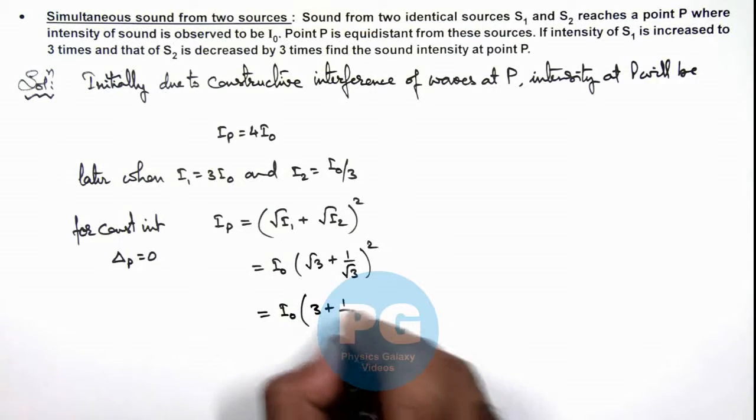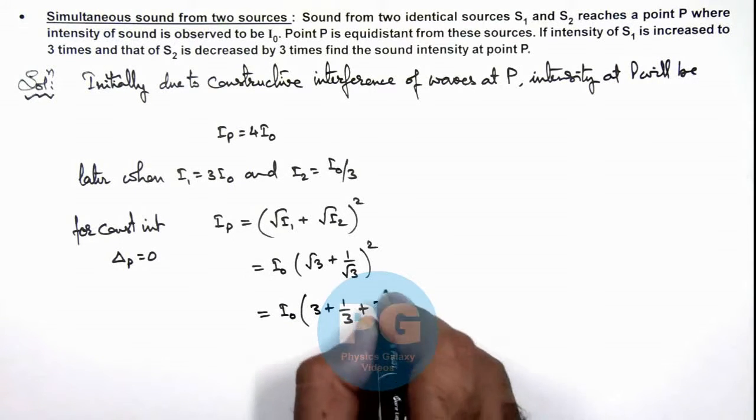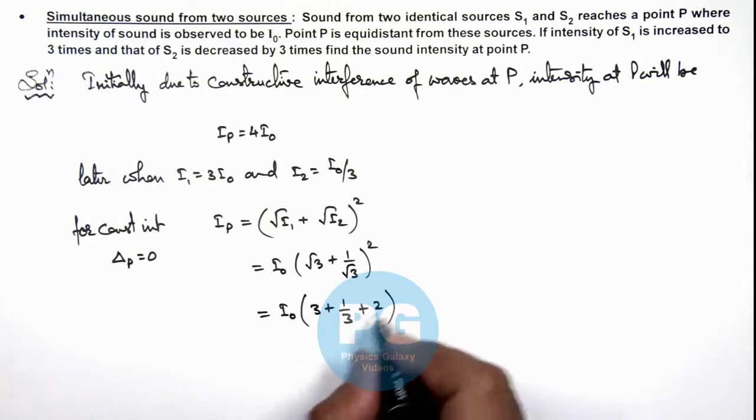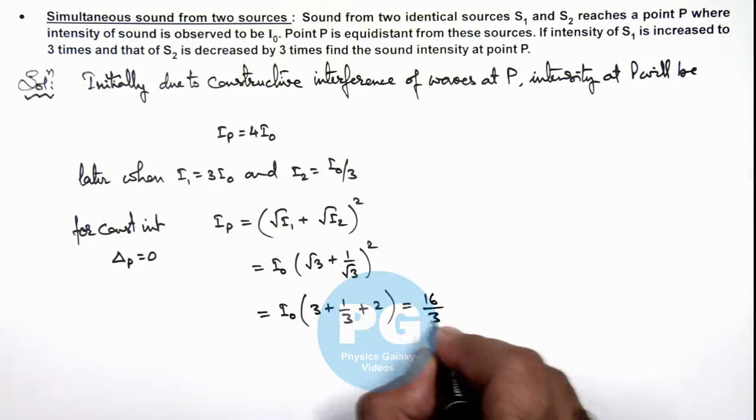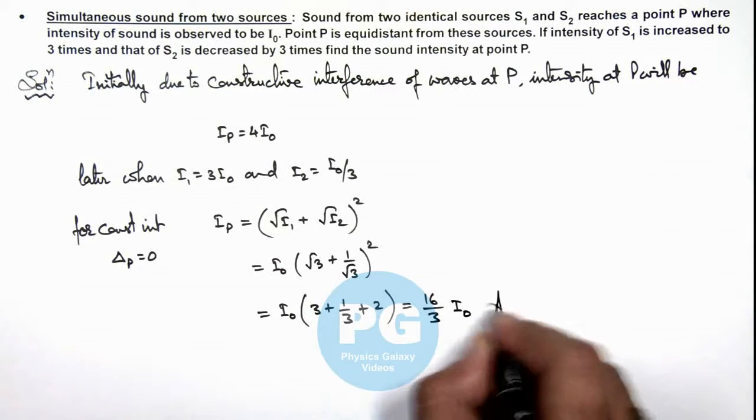So on simplifying this, it gives us 16/3 I₀. That is the result of this problem.